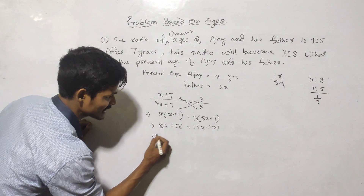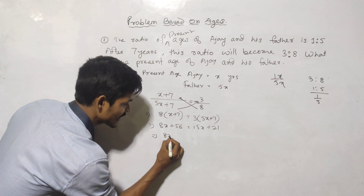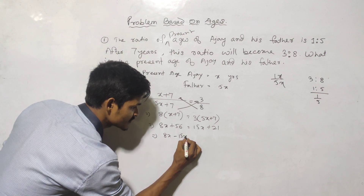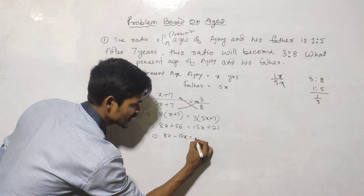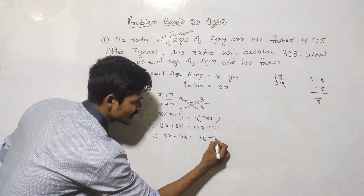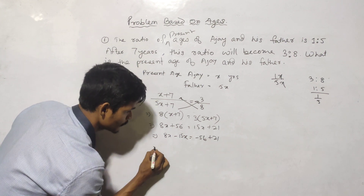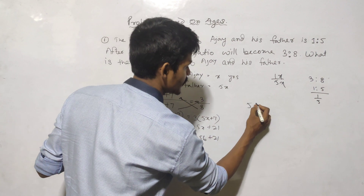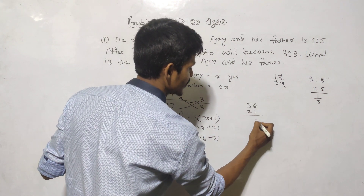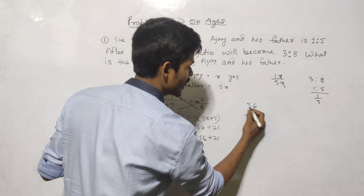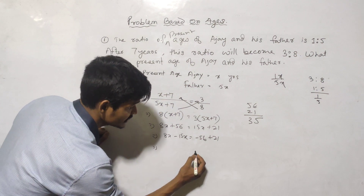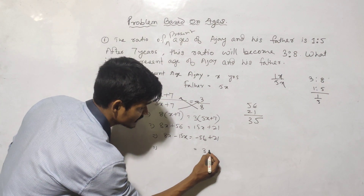We will solve this equation: 8x minus 15x, 56 minus 21. So we simplify to get the value of x.